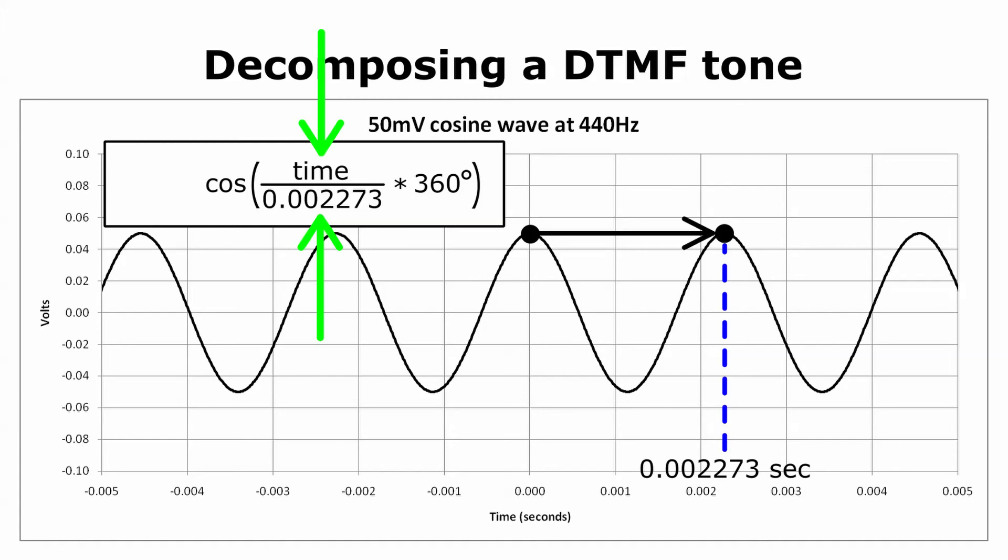The argument of the cosine function will therefore increase from 0 up to 360 degrees, and the value of the function will pass through one complete cycle. The amplitude of the cosine function is set to 0.05, the same as before, so that the waveform will cycle between minus 50 millivolts and plus 50 millivolts.